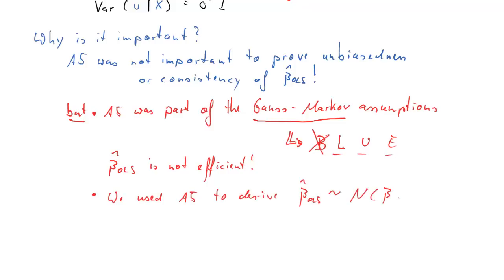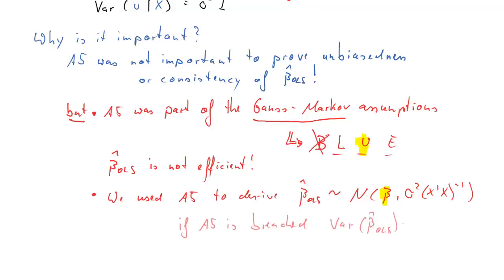We also used A5 to derive the result that beta hat OLS was normally distributed with mean beta and variance sigma squared times (X'X)^{-1}. The fact that the expected value is beta was the unbiasedness feature, and that still remains. But if A5 is breached, then the variance of beta hat OLS is no longer sigma squared times (X'X)^{-1}.